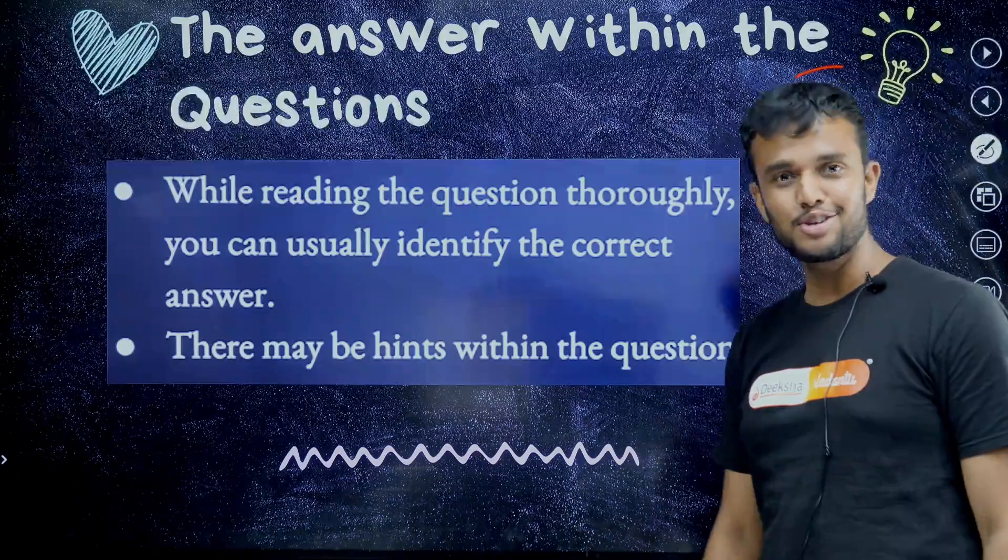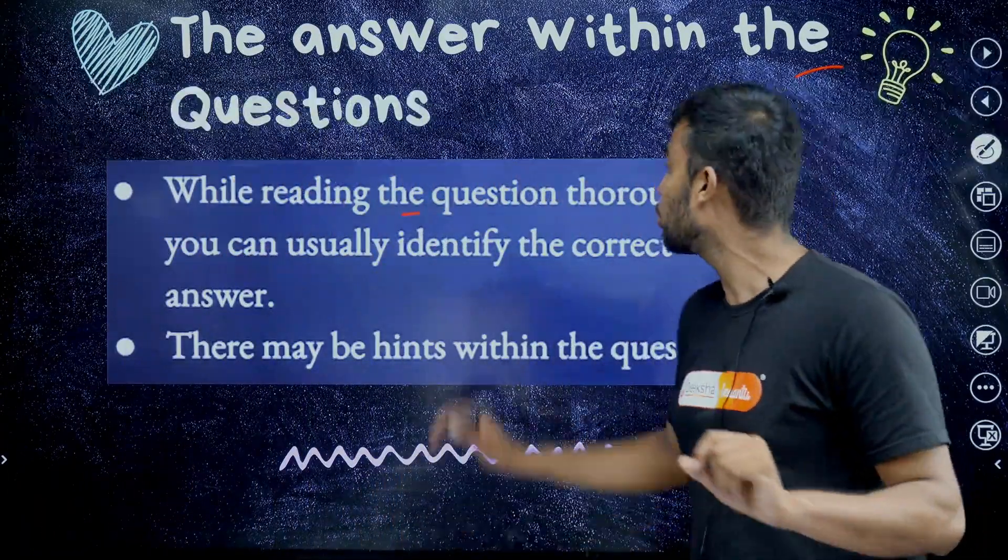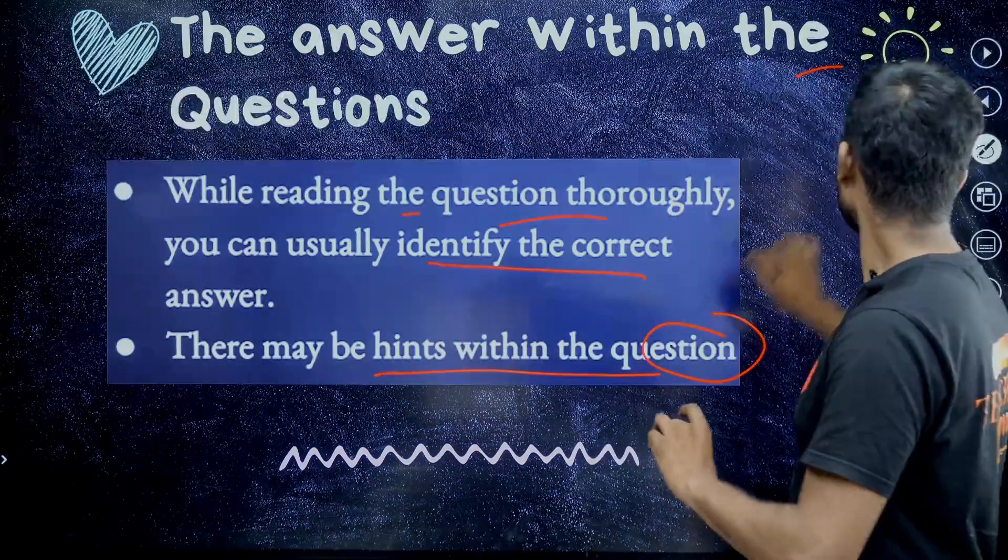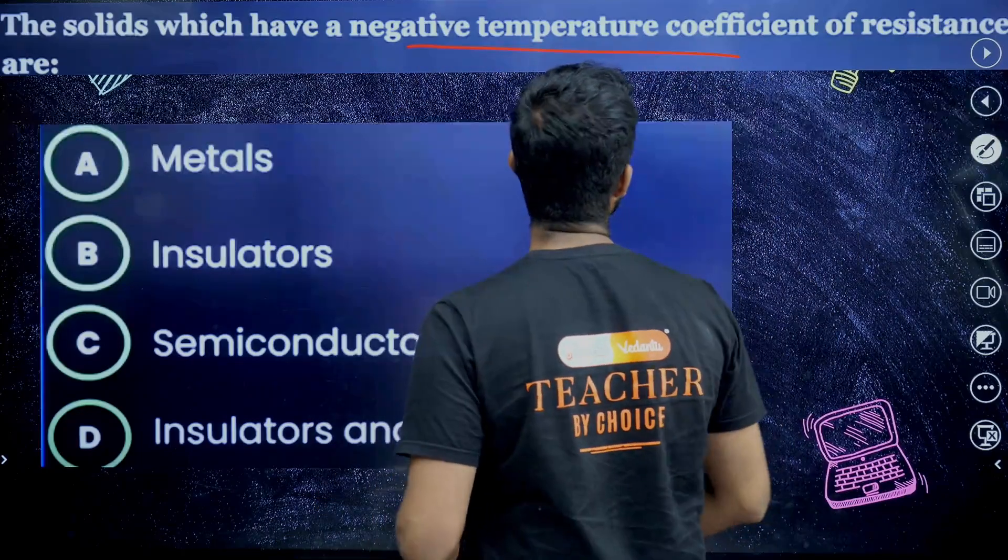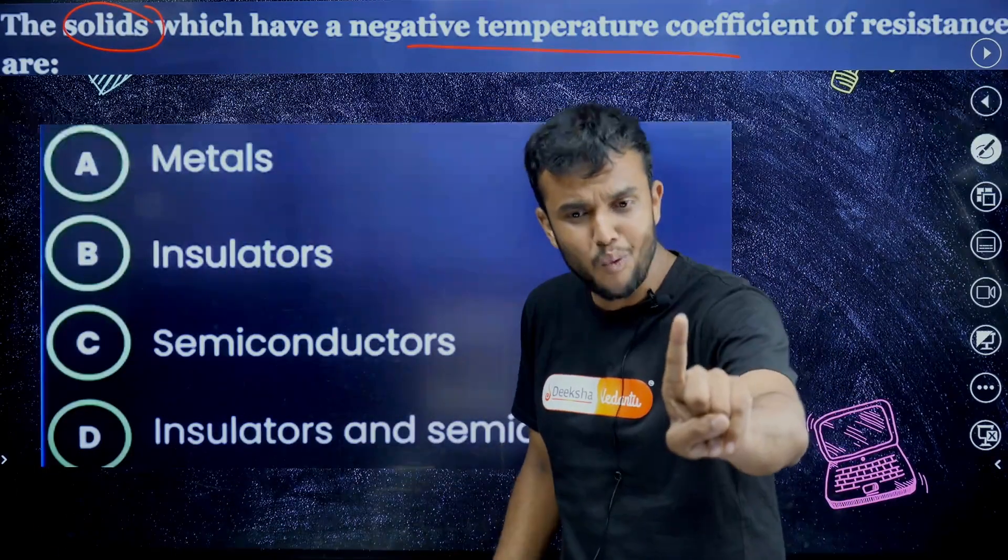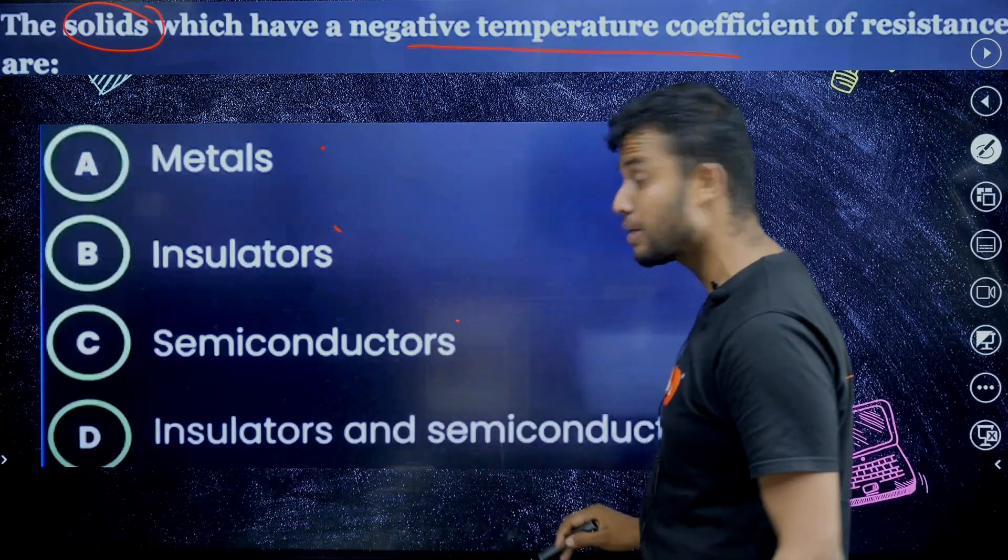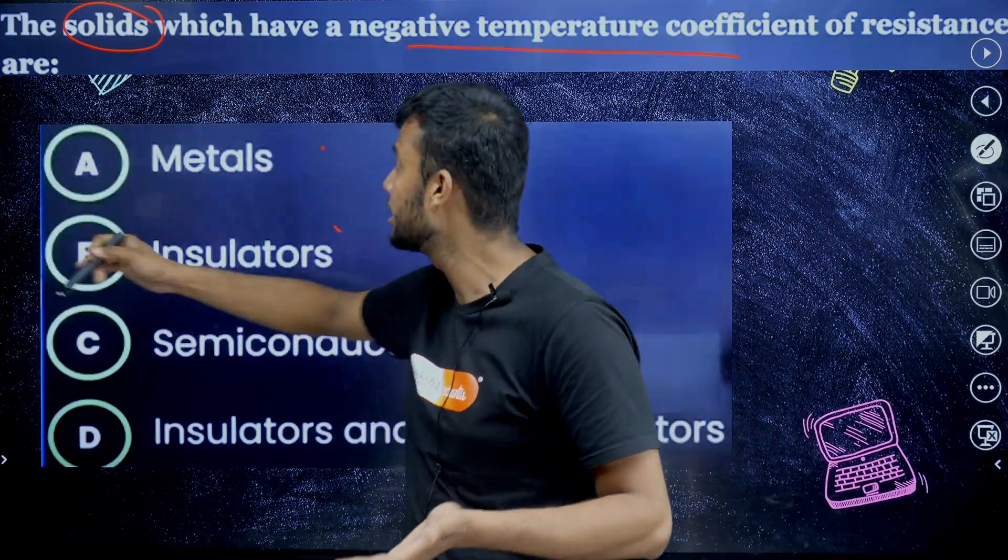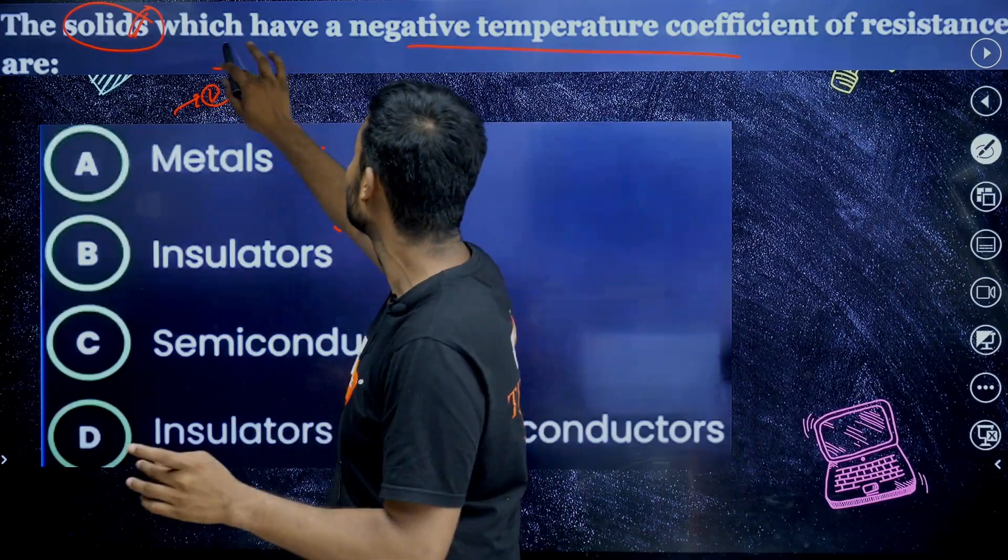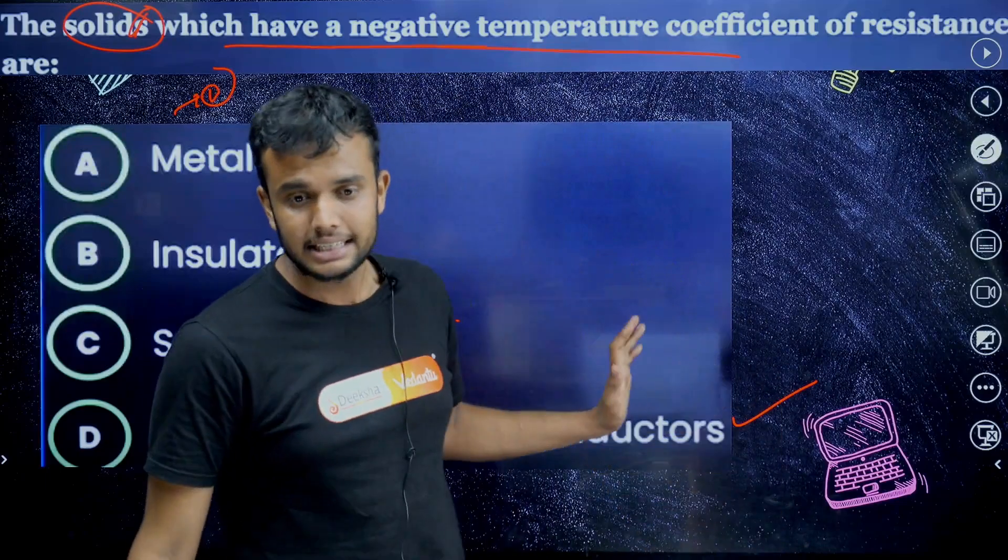Then this one: the answer within the question. You know one thing, we can easily guess the answer in the questions only. Look here. Read this one. While reading the question carefully, you can easily identify the correct answer by using question only. Then there may be hints within the question. For example, look here. The solids which have a negative temperature coefficient of resistance are. Look here, the solids is there, not just solid. If they give solid, then it's not happened. Solid is nothing but only one metal or anything. Solids, they give solids, it's nothing but it is plural. Metals, insulator, semiconductor. Look here, the solids, not a solid. If they give solid then you need to choose A, B, C, one. But they only give solids. Just look here, we can easily get four marks which have a negative temperature coefficient of resistance. That's why the answer is option D, semiconductors. By using this we can guess it.